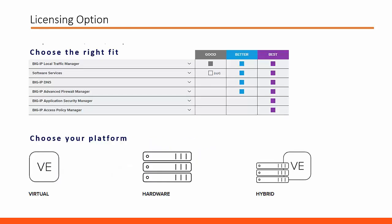Two things matter when you want to buy Big IP DNS: what products you want from the Big IP family, and which platform you will use for Big IP DNS. Good, better, and best are the three bundles available, or you can customize and buy standalone products. The better bundle is the minimum required for Big IP DNS. Three platforms are available: hardware, virtual edition on any standard hypervisor like VMware or Hyper-V, or cloud environment.